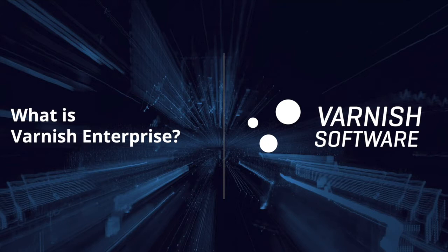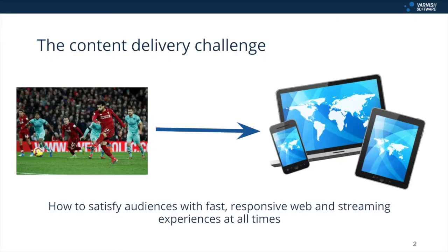To begin, let's talk about the problems and challenges that Varnish Enterprise is trying to solve. What we're concerned with at Varnish Software is how to get content — whether it's live sports on TV, streaming video on demand, dynamic web content, or data via APIs — to reach audiences as fast as possible, while also handling unpredictable, potentially vast audience sizes in different locations and on different devices, while also protecting critical back-end infrastructure from the effects of all this demand.